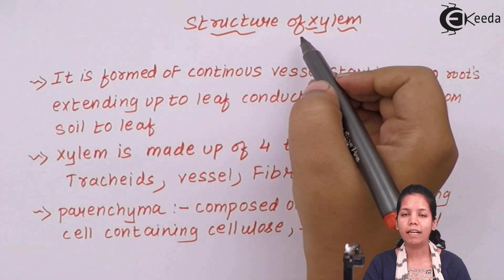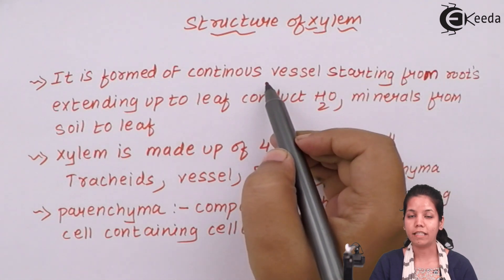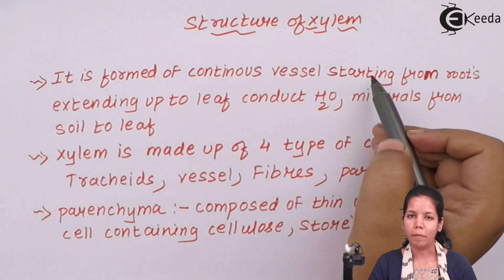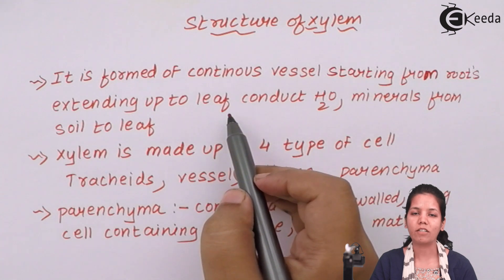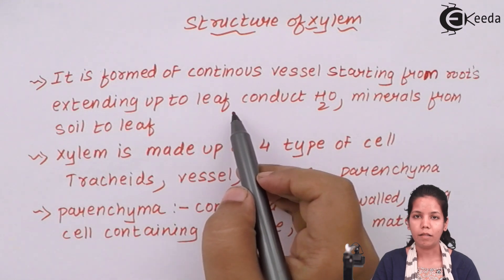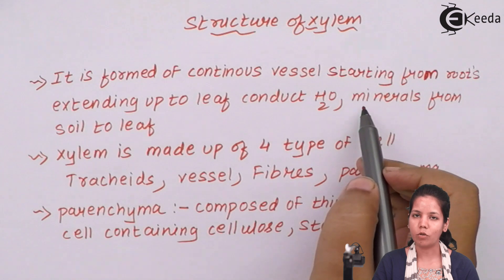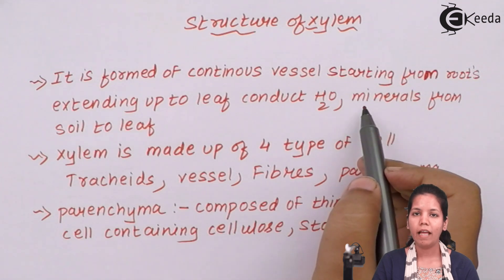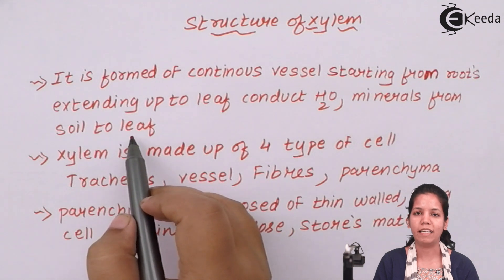Xylem is the conducting vessel of the plant. It is basically a continuous vessel that starts from the roots — the primary root, or secondary or tertiary roots — all the way to the leaf of the plant where plant food is prepared. The whole plant structure consists of xylem vessels, whose main function is to conduct water and minerals from the soil to different parts of the plant, and most importantly to the leaf where plant food is made.